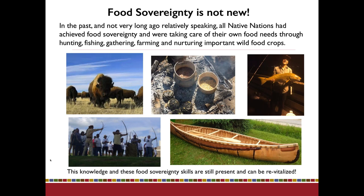Food sovereignty is not new. All Native nations had achieved food sovereignty and were taking care of their own food needs since time immemorial. How do we know? Because Native nations are still here — they were taking care of themselves with available resources for millennia before the Europeans got here. Native and Indigenous peoples across the continent were using different methods: hunting, fishing, gathering, farming, and nurturing important wild food crops — that was probably the earliest form of farming.